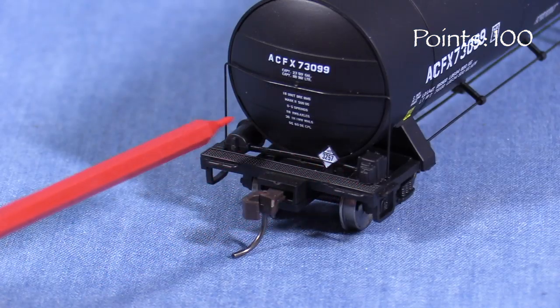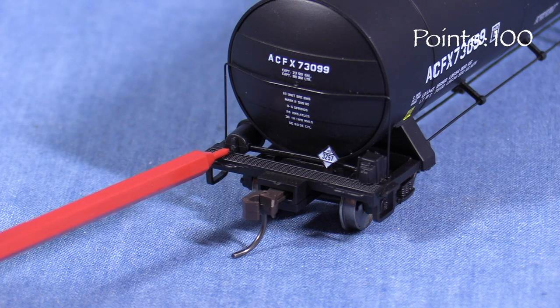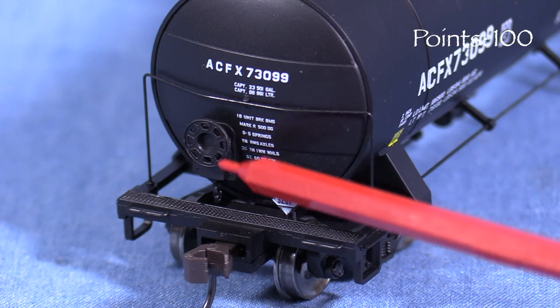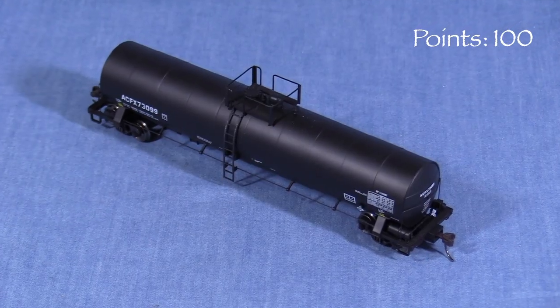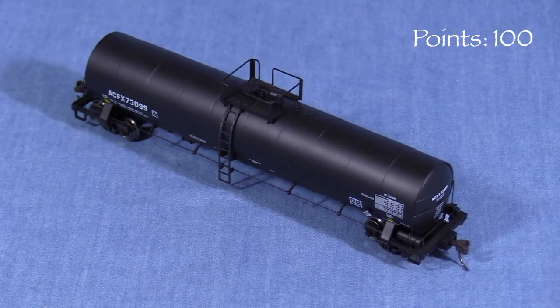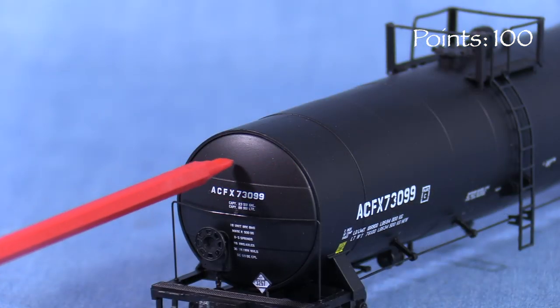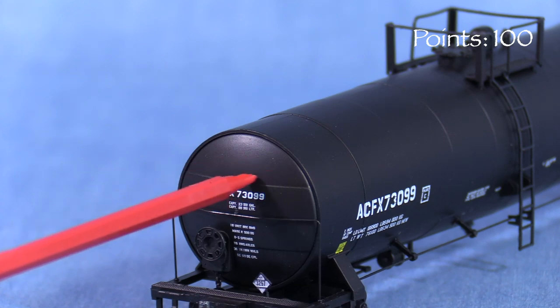The most obvious difference is that the triple valve and air reservoir are on the same end as the brake wheel on the real car. On the model, the brake wheel is on the opposite end. There are numerous other small detail differences as well. The paint job is also not quite right. On ACFX 73109, the top of the tank on the ends is painted red.